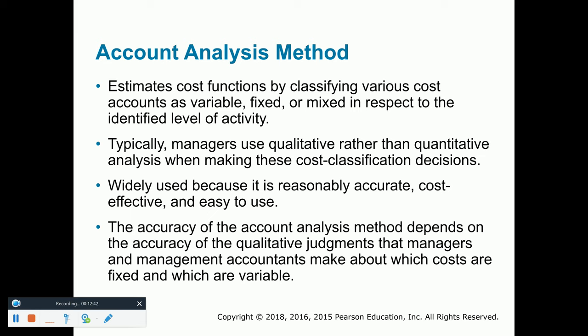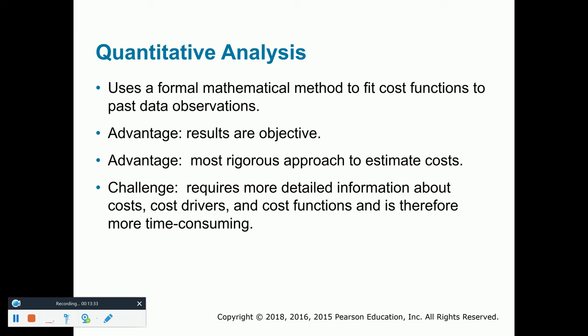Number three: the account analysis method. This estimates costs based on classifying various cost accounts as variable, fixed, or mixed. Typically, managers will use qualitative rather than quantitative analysis when making these cost classification decisions. It's widely used, pretty accurate, and cost effective — which is different from the industrial engineering method. When we analyze each account and try to break down that cost as fixed, mixed, or variable using qualitative analysis for each of them, it works out pretty well.